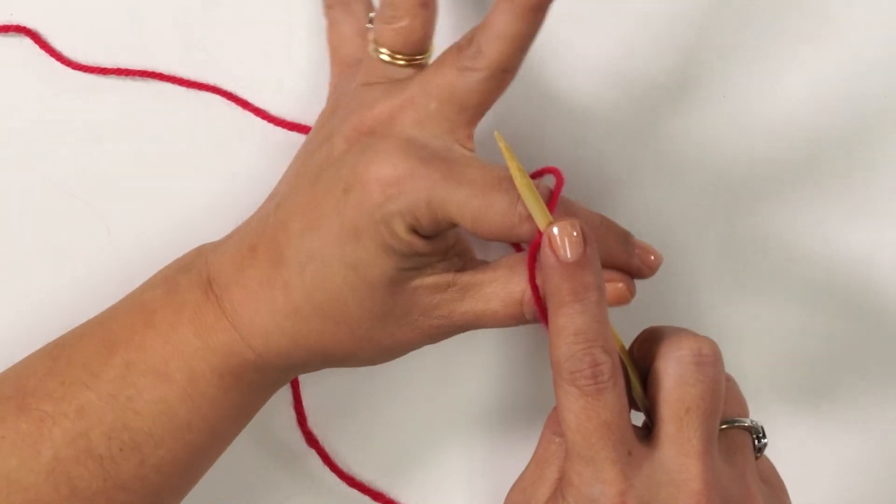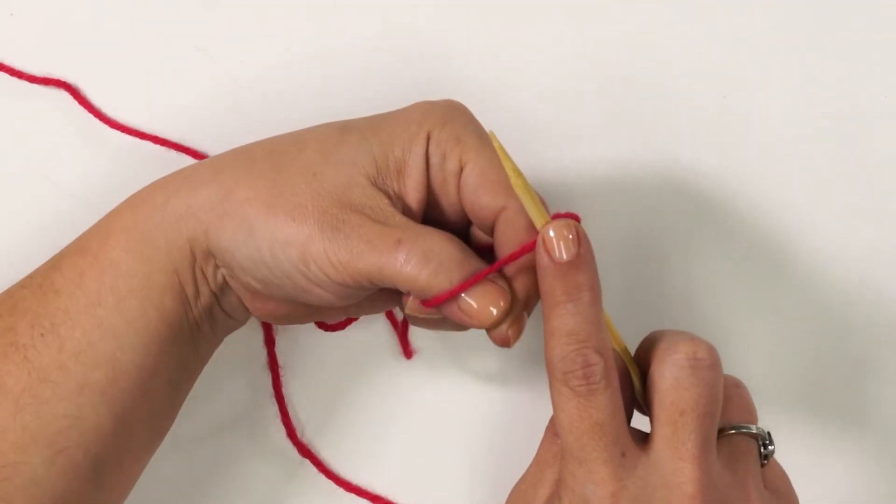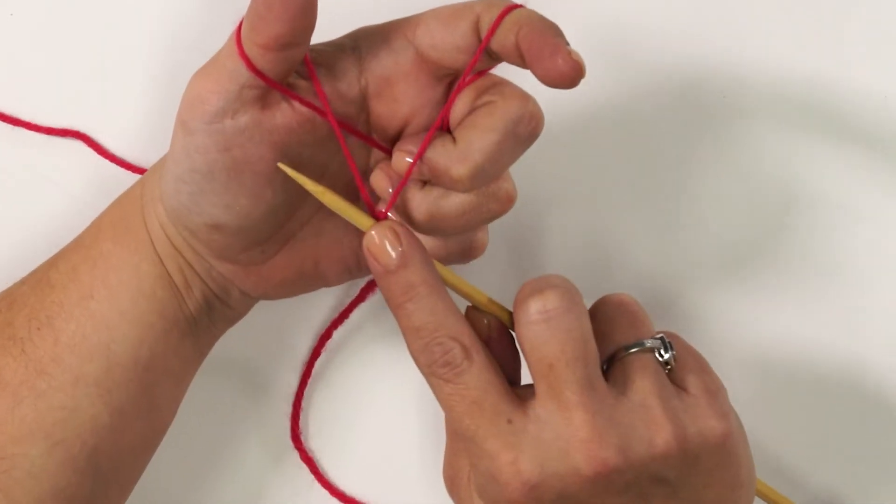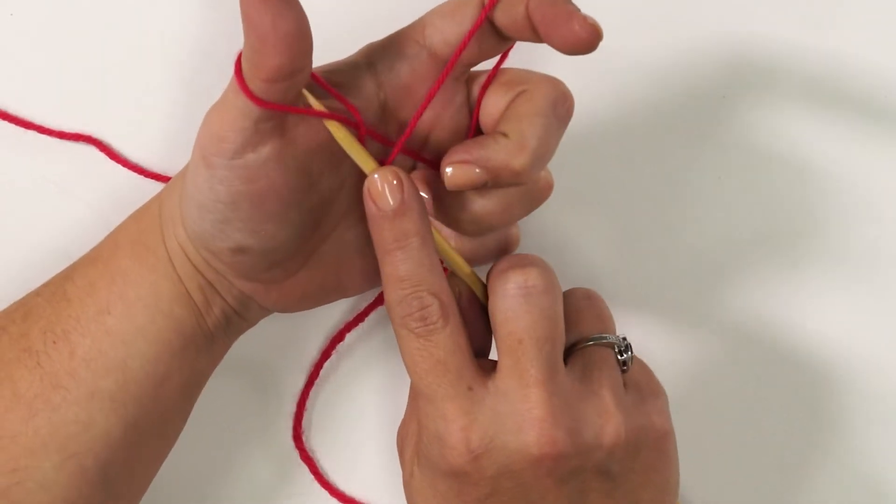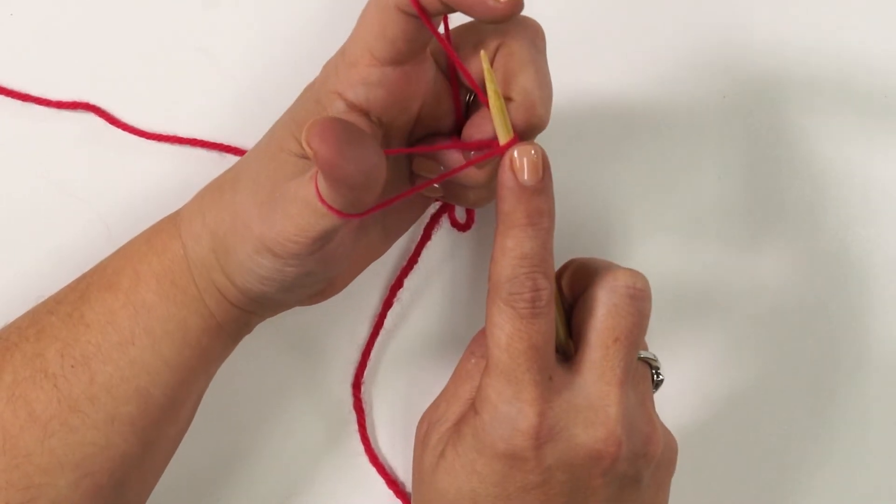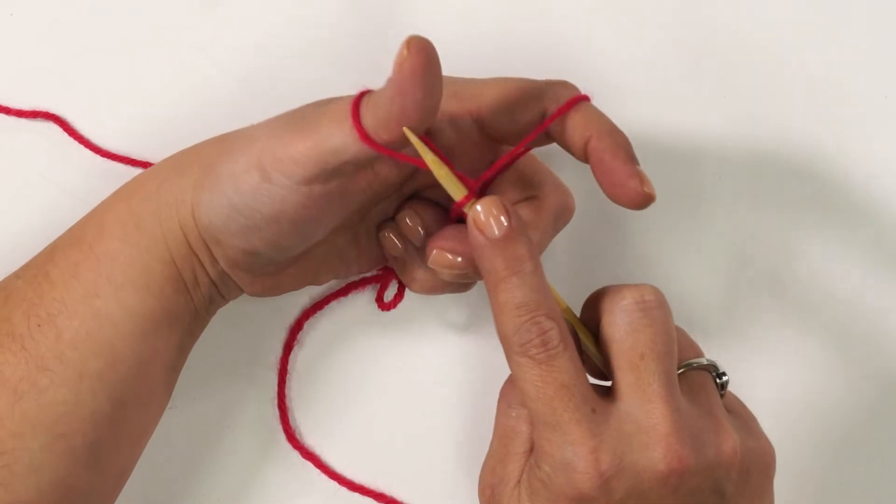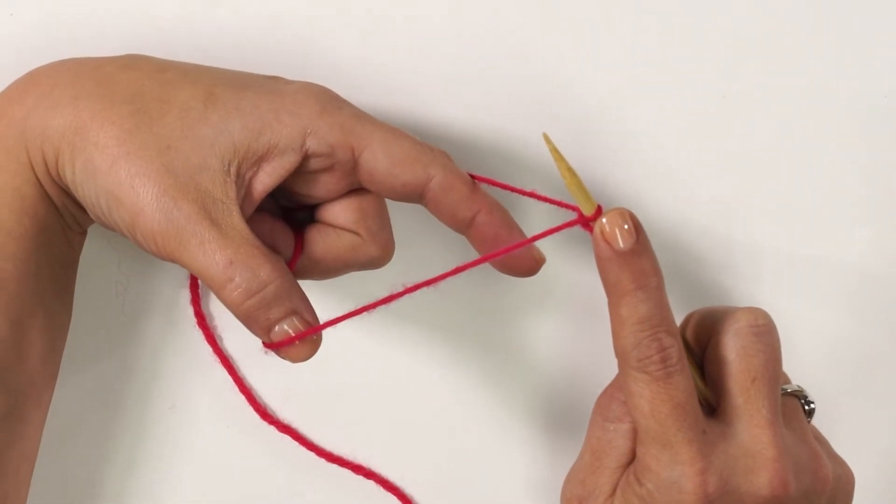Now let's do that again. Slide your finger through the strands. Bring the needle down to make the slingshot. Now scoop under the thumb, over the index finger, and back through the loop on your thumb. Slide your thumb out and snug up the stitch.